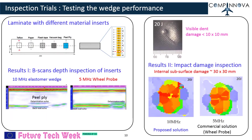Inspection trials: the developed PA module was tested for performance in the laboratory on a laminate with different embedded material inserts as artificial defects. The depth of inserts very close to the top surface and close to the bottom surface can be located. Result one indicates the comparison of two B-scans collected from the 10 MHz elastomer wedge and from a 5 MHz wheel probe. The results indicate that the 10 MHz elastomer wedge can detect defects very close to the back surface.